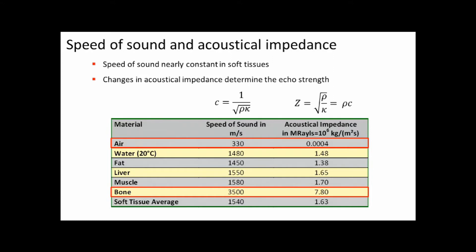There is another number here: acoustical impedance, calculated as mass density times speed of sound. This number tells you whether a difference in acoustical impedance will cause a reflection and how strong that reflection will be. So a change in acoustical impedance causes reflection or scattering. There is little difference in acoustical impedance for most soft tissues, but there is a big jump for bone and also a very big one for air. That means when you use an ultrasound scanner, if there is air or bone, you will have a very strong reflection and the sound will be stopped at the air or bone level.